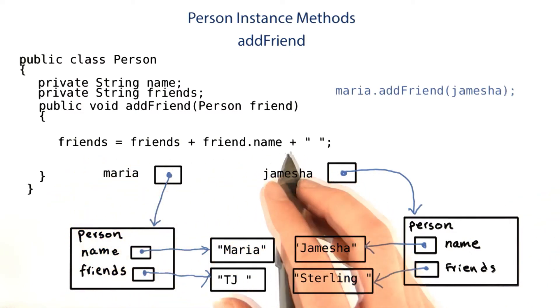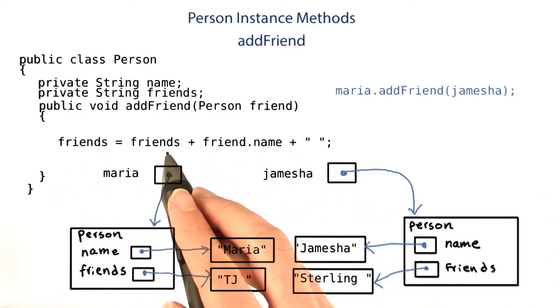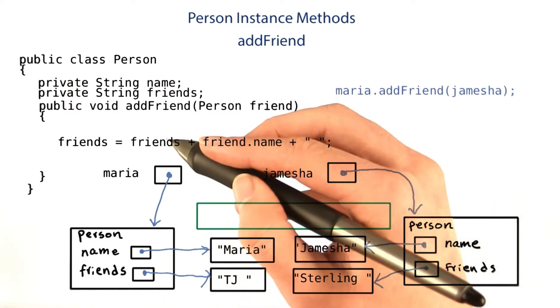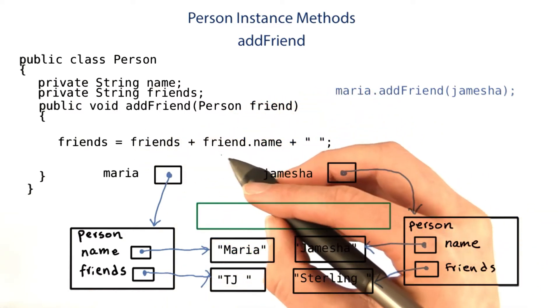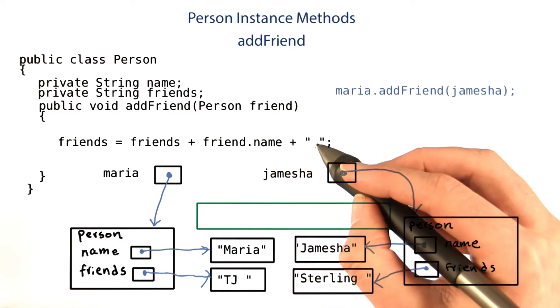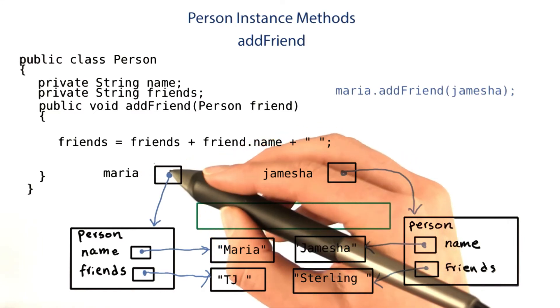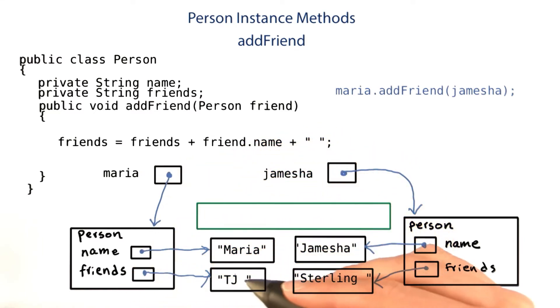Now when this line runs, the first thing it does is create a new string from these ones. This will be the new string that's created. It's going to put together friends, friend.name, and a space. Friends is the friends of the Maria object because that's what we called the method on. So we go to the Maria object, and friends is currently just TJ with a space.